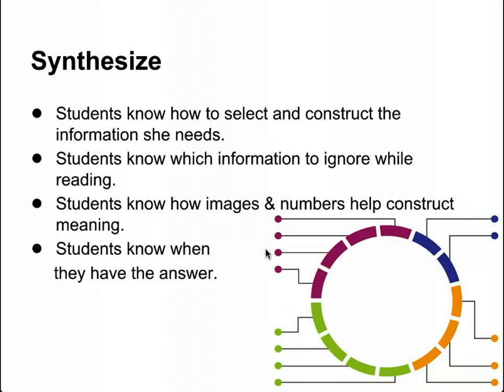In online reading comprehension, we also want students to synthesize across multiple information sources — this is hugely complicated, and I think we don't spend enough time on it. A student successful in synthesis knows how to select and construct the information she needs, knowing what parts to include and leave out. Students also know which information to ignore, and they understand how numeracy is hugely important online — how images, visual literacy, numbers, charts, and graphs help construct meaning, and they can pull information from those sources into their synthesis.